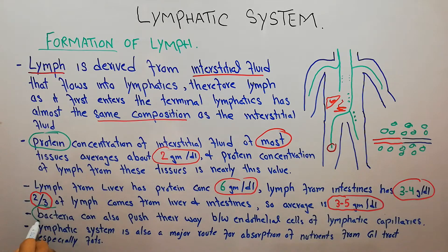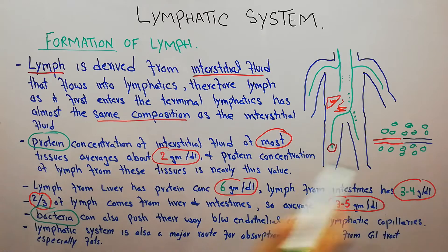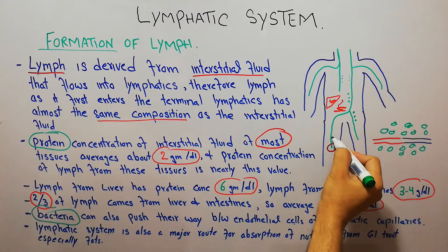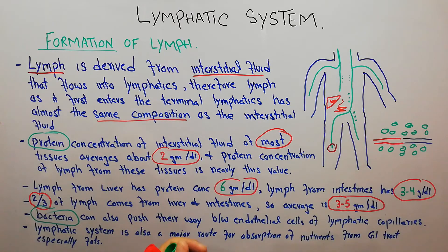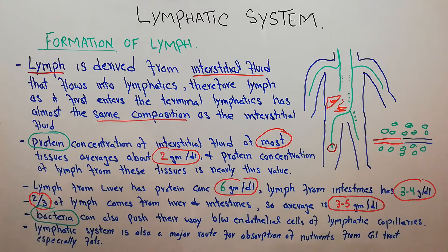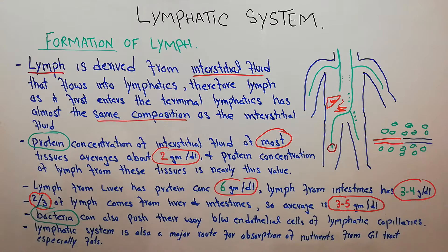The second component in the formation of lymph includes large particles like bacteria and viruses. Bacteria can also push their way between the endothelial cells of lymphatic capillaries. We have discussed how the endothelial cells in the lymphatic capillary have overlapping parts, creating room for absorption of large particles. Bacteria are large particles and can push their way in more easily through lymphatic capillary endothelial cells compared to blood vessel endothelial cells.